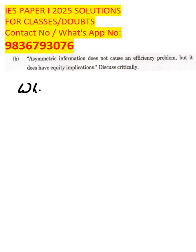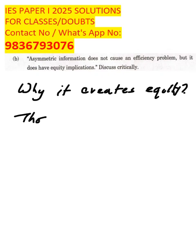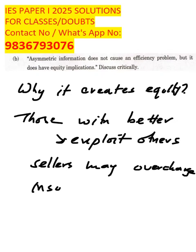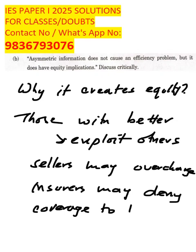Why it creates equity issue? Because those with better information, they will always exploit others. Distribution of benefits becomes unequal. Sellers may overcharge, and insurers may deny coverage to honest buyers.